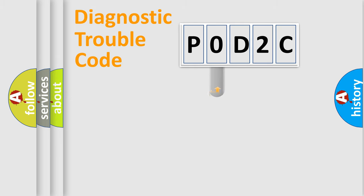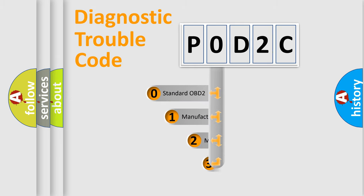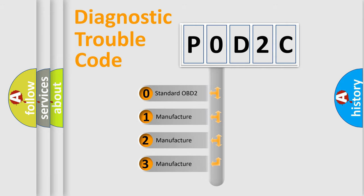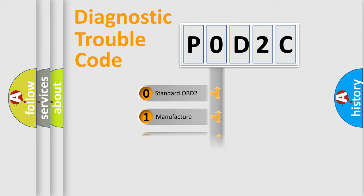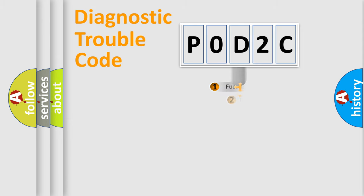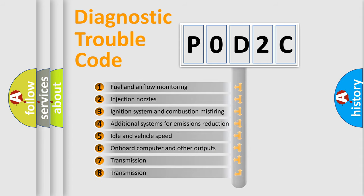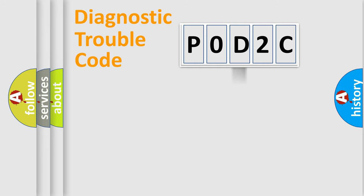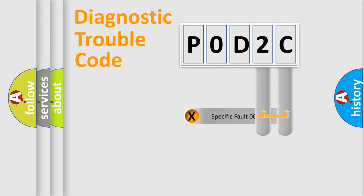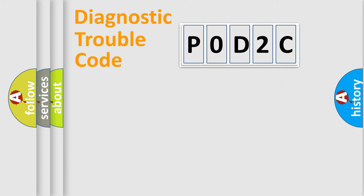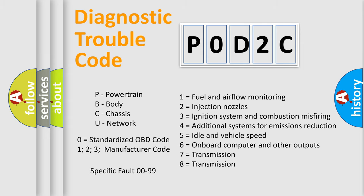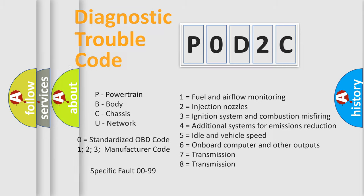This distribution is defined in the first character of the code. If the second character is expressed as zero, it is a standardized error. In the case of numbers 1, 2, or 3, it is a manufacturer-specific error expression. The third character specifies a subset of errors. This distribution is valid only for the standardized DTC code, where the last two characters define the specific fault of the group.